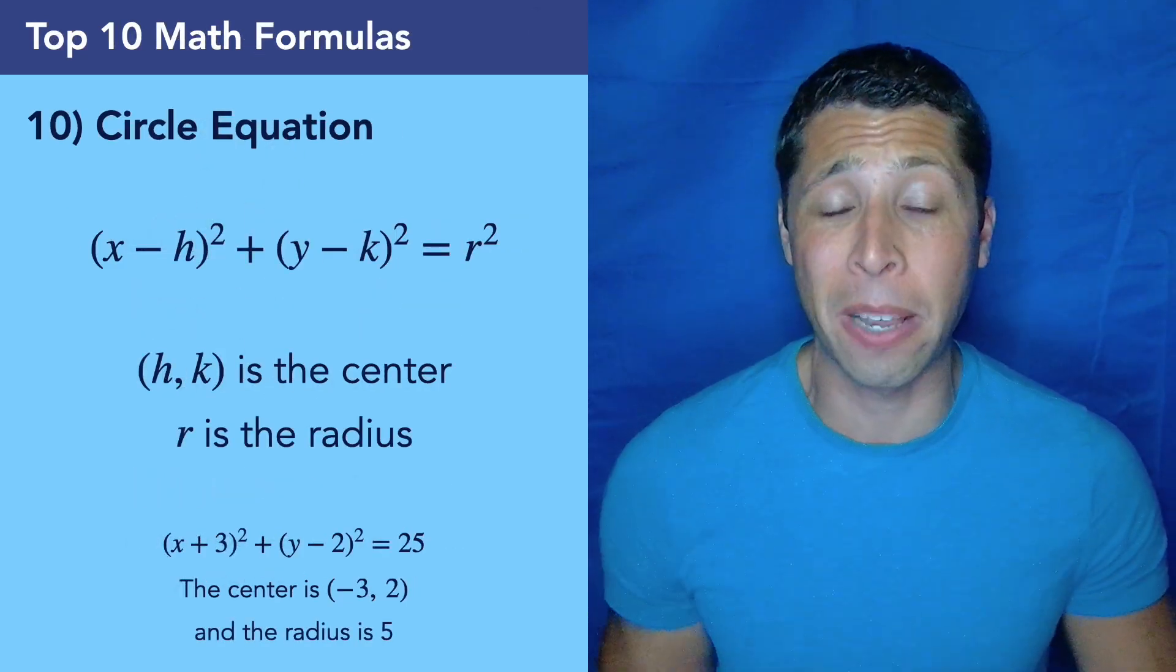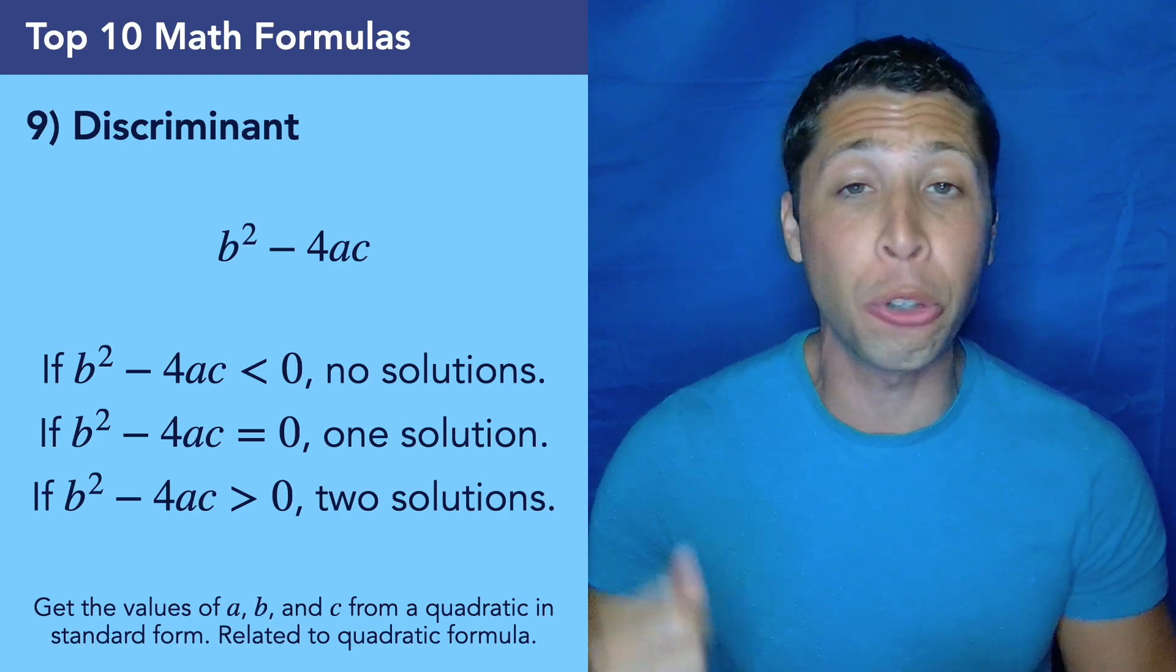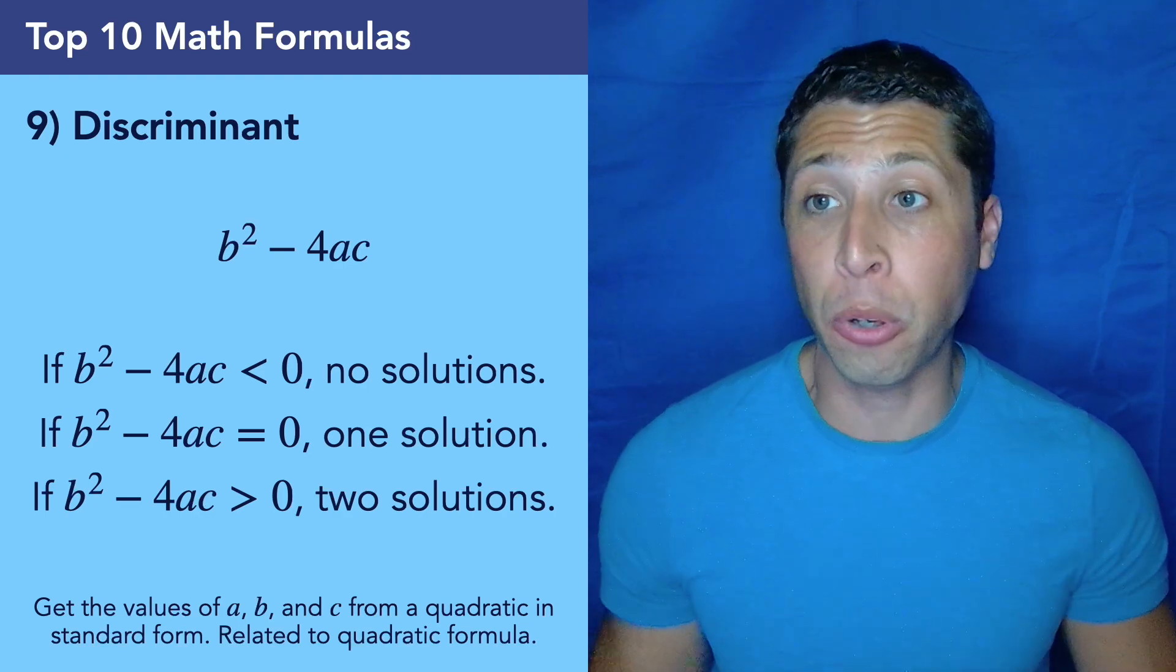So let's get right into it. Number 10, the circle equation, easily worth 10 points. Number 9, the kind of annoying to memorize, the discriminant is going to tell us the number of solutions for any quadratic, only really for top scorers.